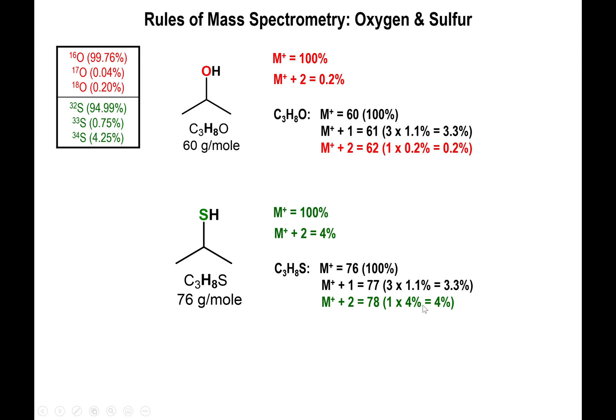Sulfur gives a value of about 4% for the M+2 peak. When you see the M+2 peak, look for multiples of 4 — that indicates sulfur. Divide the M+2 percentage by 4 to determine how many sulfurs are in your formula.